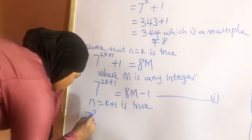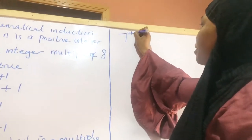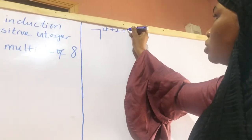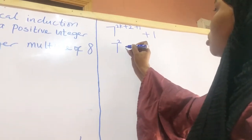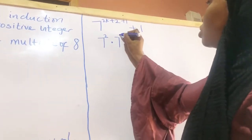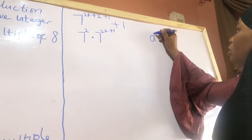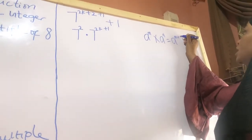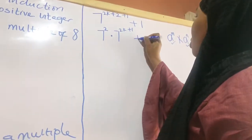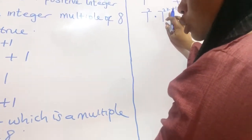So we have 7 raised to the power of 2 multiplied by (k plus 1), plus 1, plus 1. This becomes 7 raised to the power of 2k plus 2, plus 1, which by the law of indices — where a^(m+n) = a^m × a^n for the same base — gives us 7 raised to the power of 2k plus 1, multiplied by 7 squared, plus 1. Call this equation 2. Recall that 7 raised to the power of 2k plus 1 equals 8m minus 1, which is equation 1.